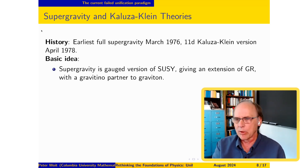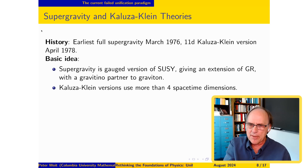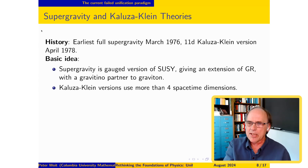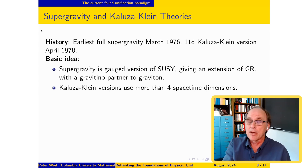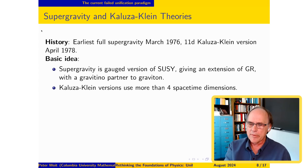Going way back to the early days of general relativity, people had been looking at what happens if you have more than four spacetime dimensions. One thing you might try is to explain where SU(2) and SU(3) come from by postulating more than four spacetime dimensions — so-called internal dimensions which explain the gauge structure. That had been an idea around for a long time, and it became a big part of this paradigm.